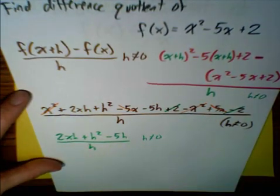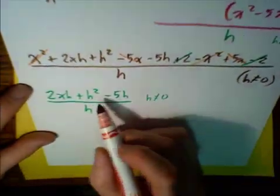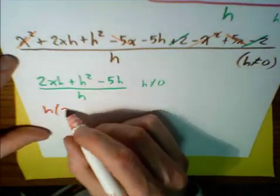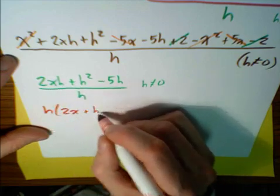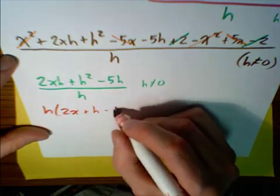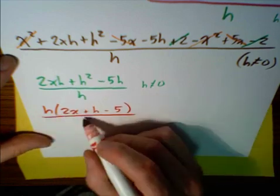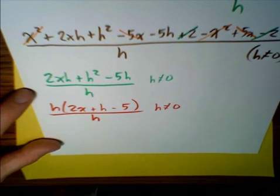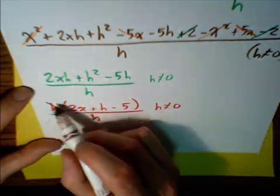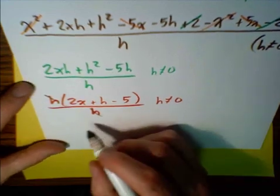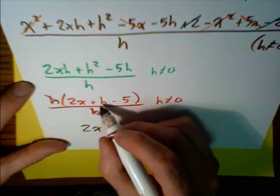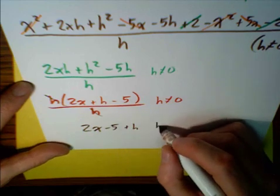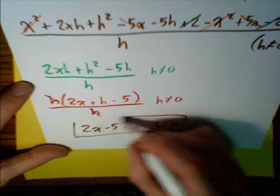The numerator has h that we can factor out. Factoring h gives us h times the quantity 2x plus h minus 5, all over h. These h's cancel out, and the final answer is 2x minus 5 plus h, with h not equaling 0.